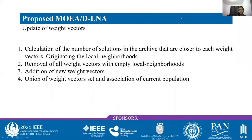I'm going to present the update of the weight vector procedure of MOEA/D-LNA, which we believe is the main part of our work. The update has four steps. The first one is the calculation of the number of solutions in the archive that are closest to each weight vector, originating what we call the local neighborhoods. Next, we have the removal of weight vectors with empty local neighborhoods, followed by the addition of new weight vectors, and after that we create the new set of adopted weight vectors and associate it to the current population.